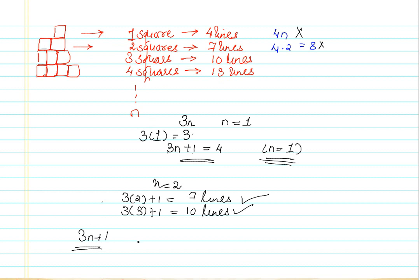The expression 3n plus 1, where n is the number of squares, gives the number of lines required to form that many squares. We have taken a numerical pattern and from a trial and error method, found an algebraic expression for how many lines are required for n number of squares. Let me take one more example to reinforce the same thing — I have another pattern here.